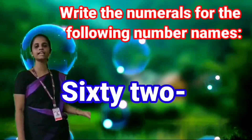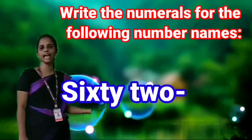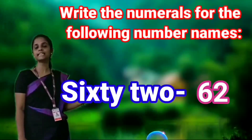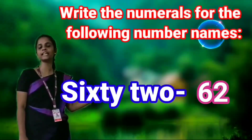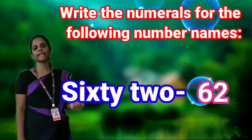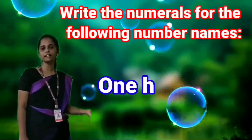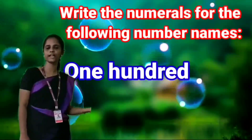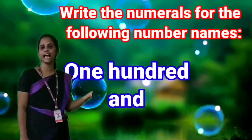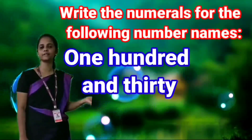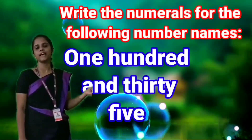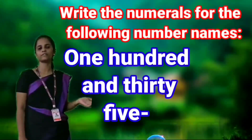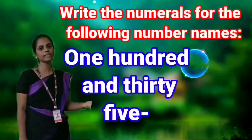S-I-X-T-Y-T-W-O. What is that? Sixty-two. So what we should write there? 62. Next: O-N-E H-U-N-D-R-E-D A-N-D T-H-I-R-T-Y F-I-V-E. One hundred and thirty-five.